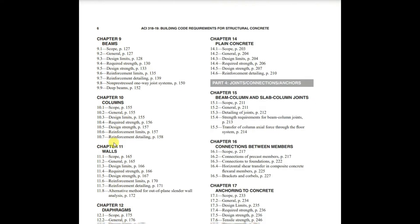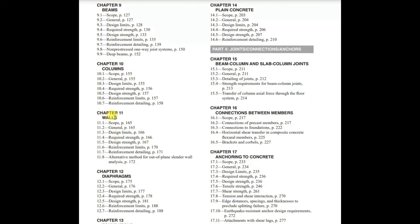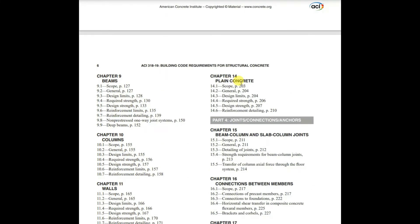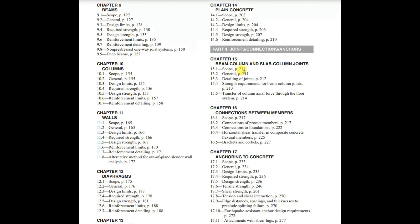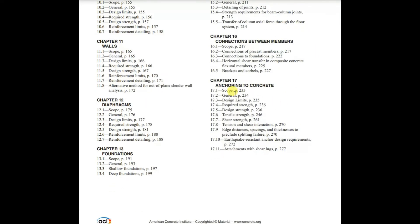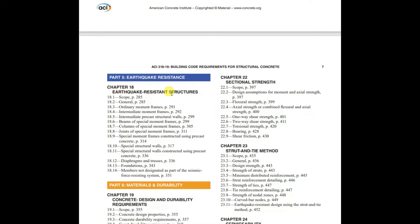Chapter 9 is for beams. Chapter 10 is for columns. Chapter 11 is for walls. Chapter 12 is for diaphragms. Chapter 13 is for foundations. Chapter 14 is for plain concrete. Chapter 15 is for column and slab-column joints. Chapter 16 is for connections between members. Chapter 17 is for anchoring to concrete. Chapter 18 is for earthquake-resistant structures.